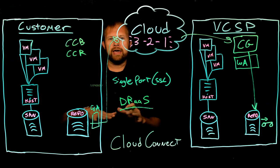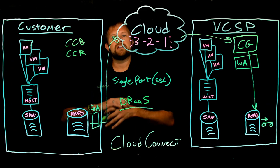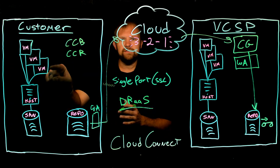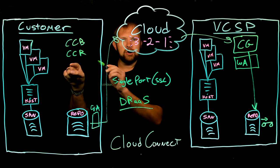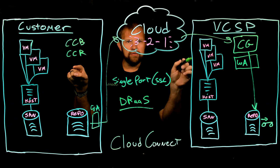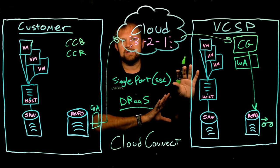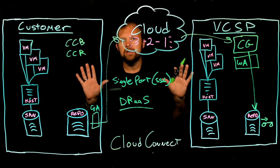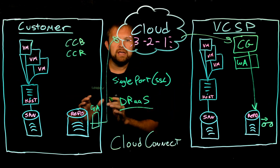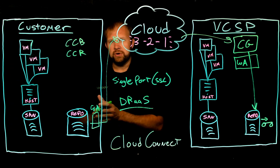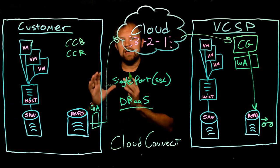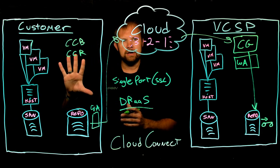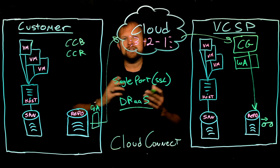Let's take a step back and clarify what replication means to Veeam, because there are several definitions. Veeam replication takes a VM on your side and creates a fully functioning copy at a target side — whether that's in a VCSP data center or your own DR site. We're not replicating backups from repository A to repository B. We're making fully functioning copies ready to go, so if your entire data center goes down, you can run your business from the secondary data center.